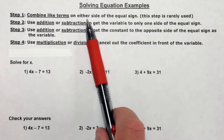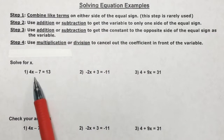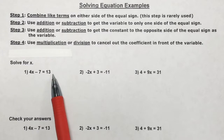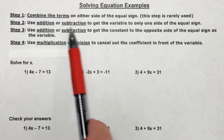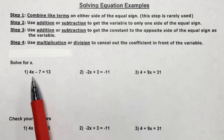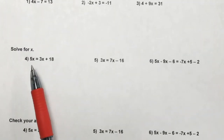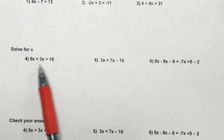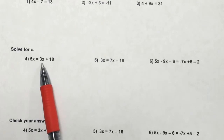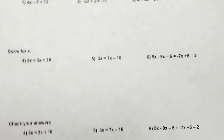Step one: combine like terms on either side of the equal sign. These terms are not the same, so I can't combine them. There's 13 here, nothing to combine, so I skip that. Step two: use addition or subtraction to get the variable to only one side. I have the variable on one side already. When I get to problems four, five, and six, notice how the variable is on both sides — that's when I need to apply this step.